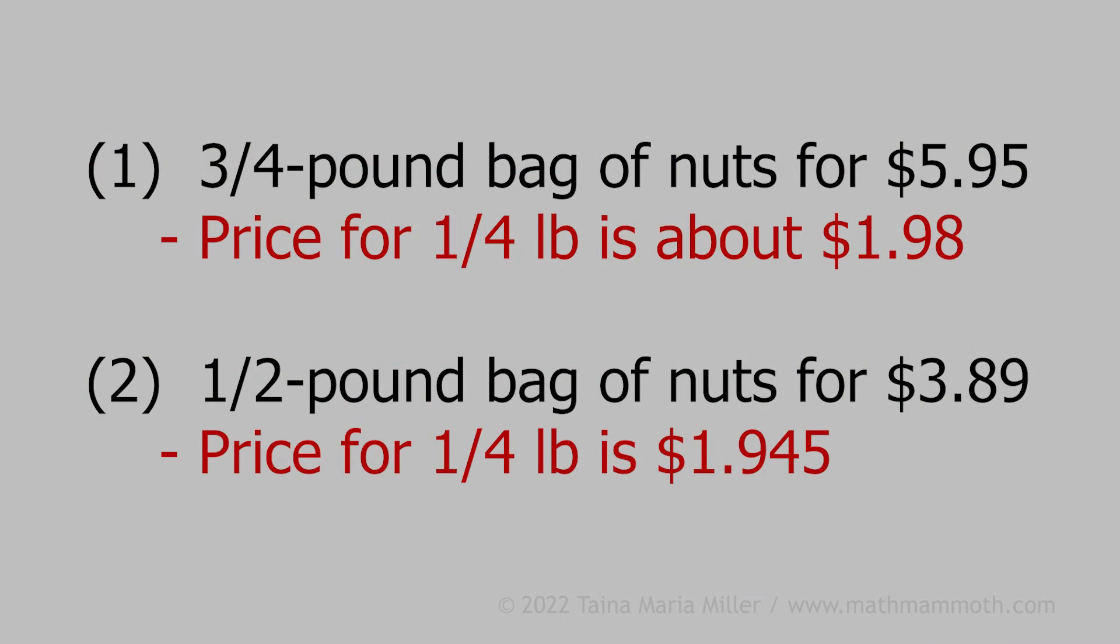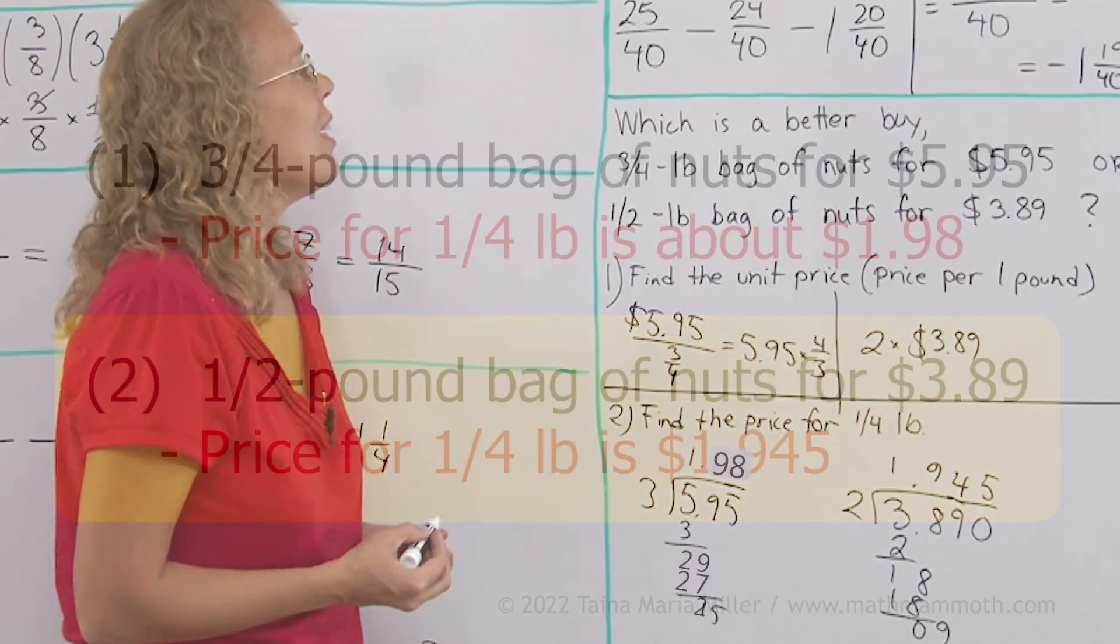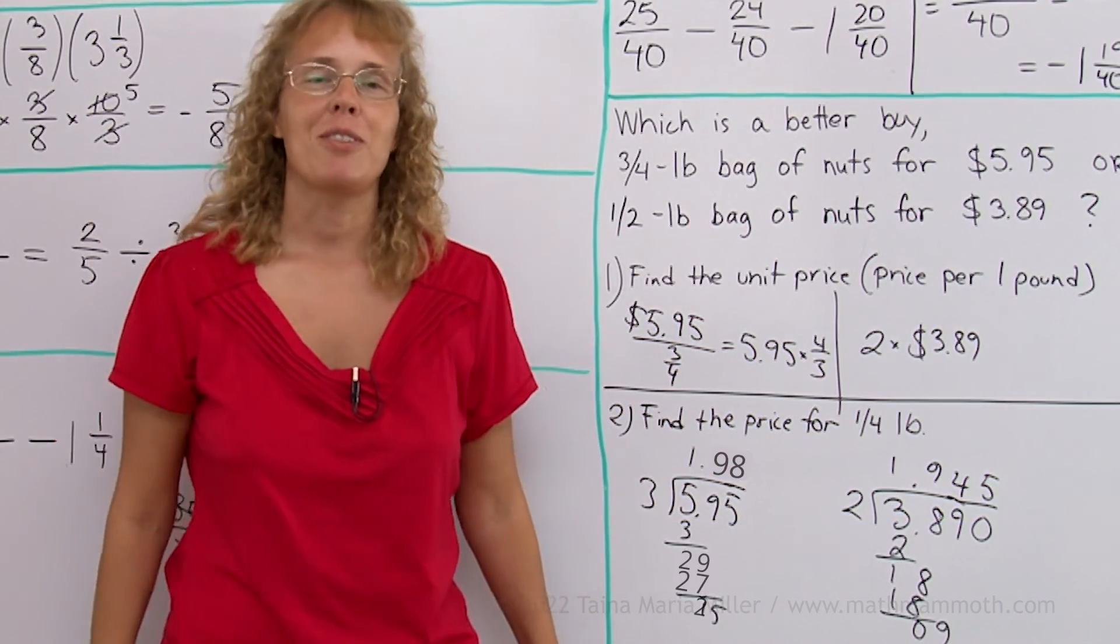But of course we can now see easily that this is the cheaper price. This one is cheaper per 1/4 of a pound. But of course it means it is also cheaper per pound. This is the better buy. We're all done. And I hope this was helpful.